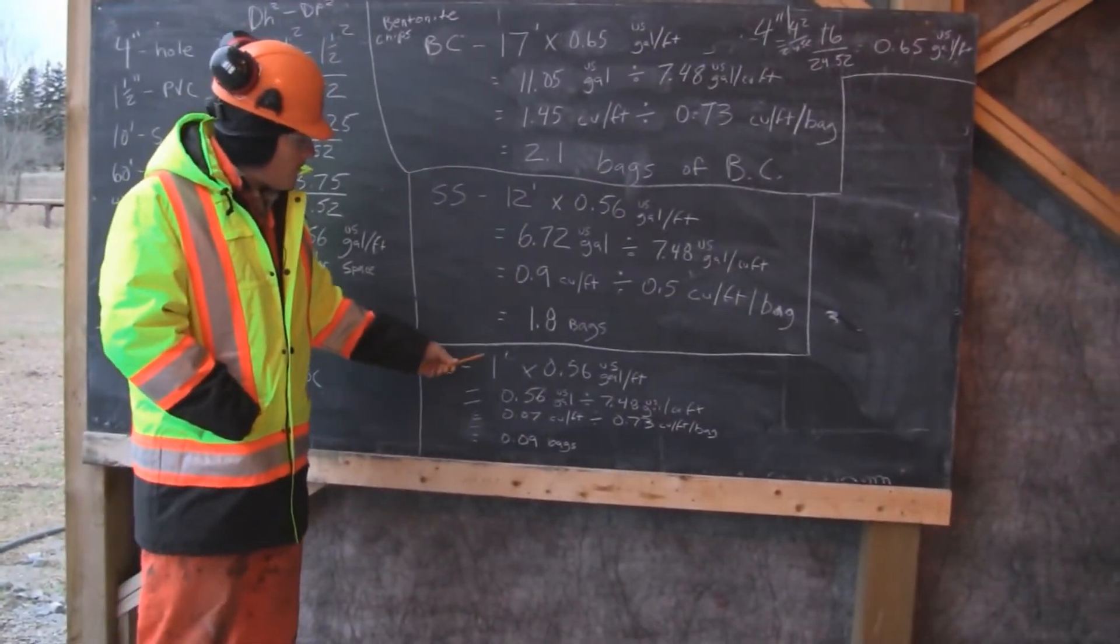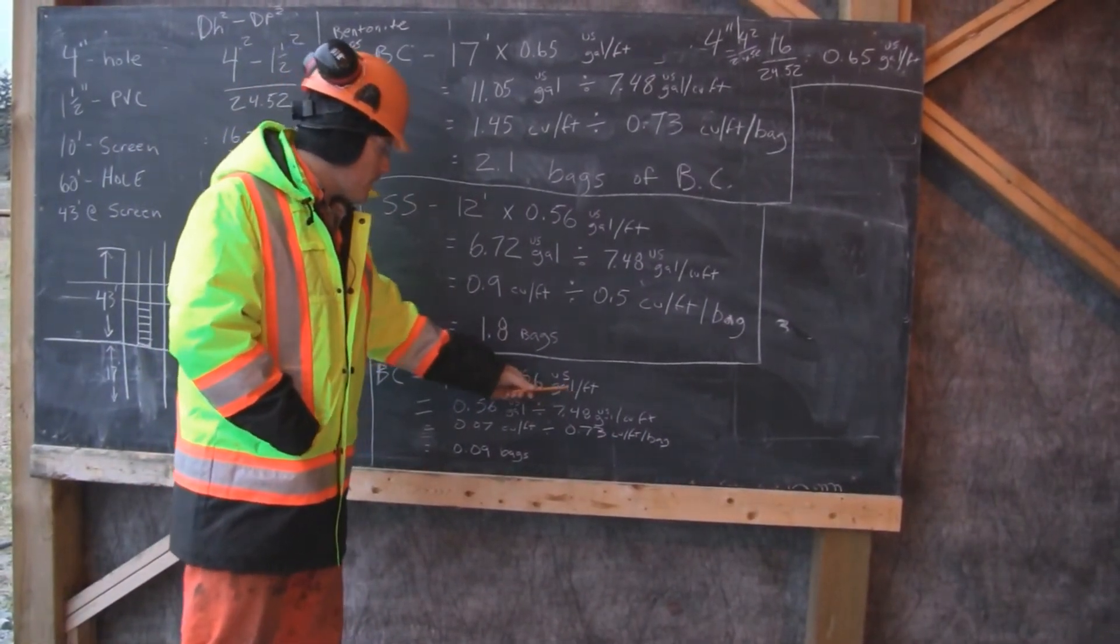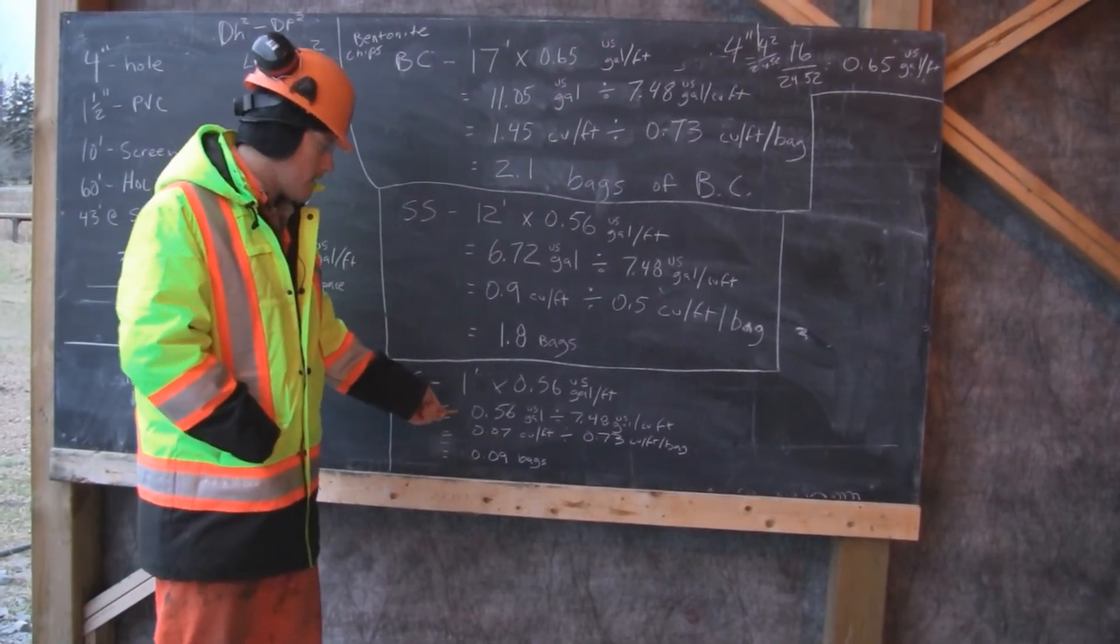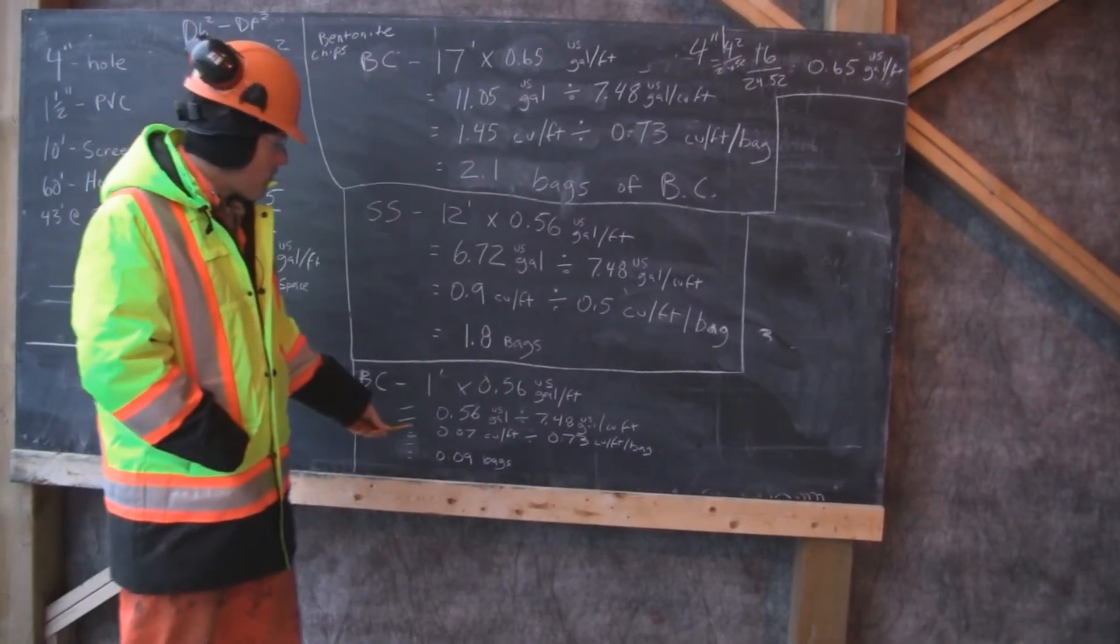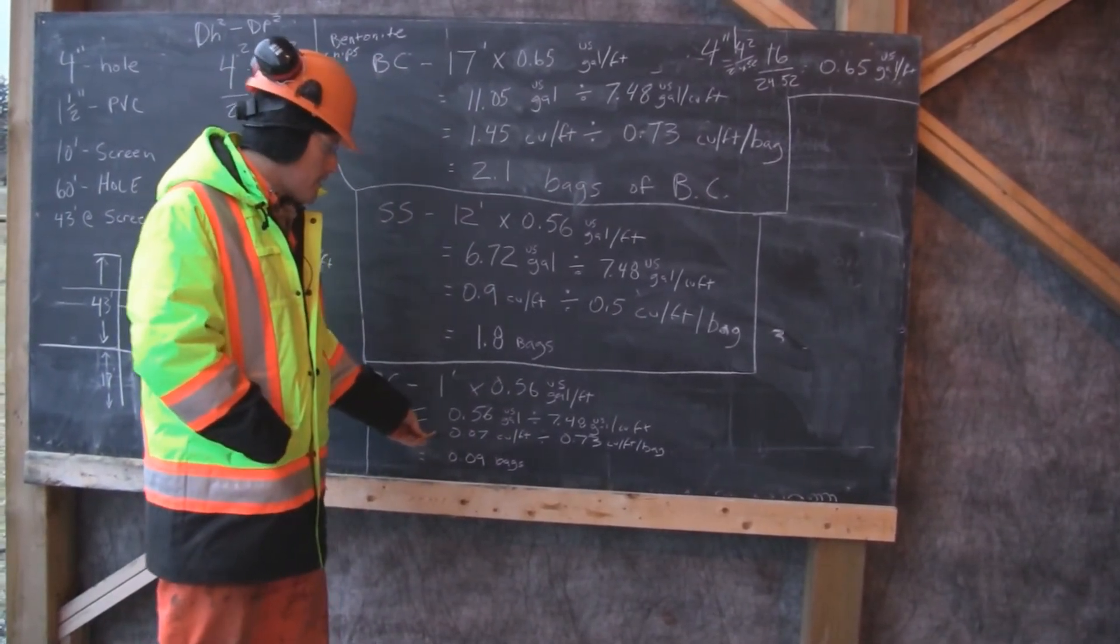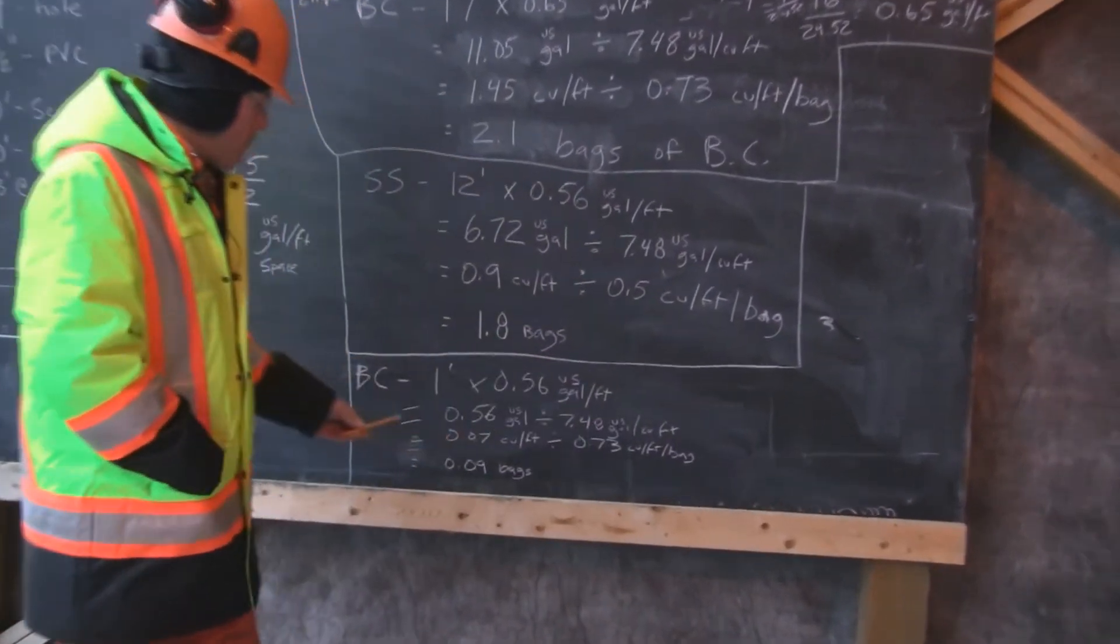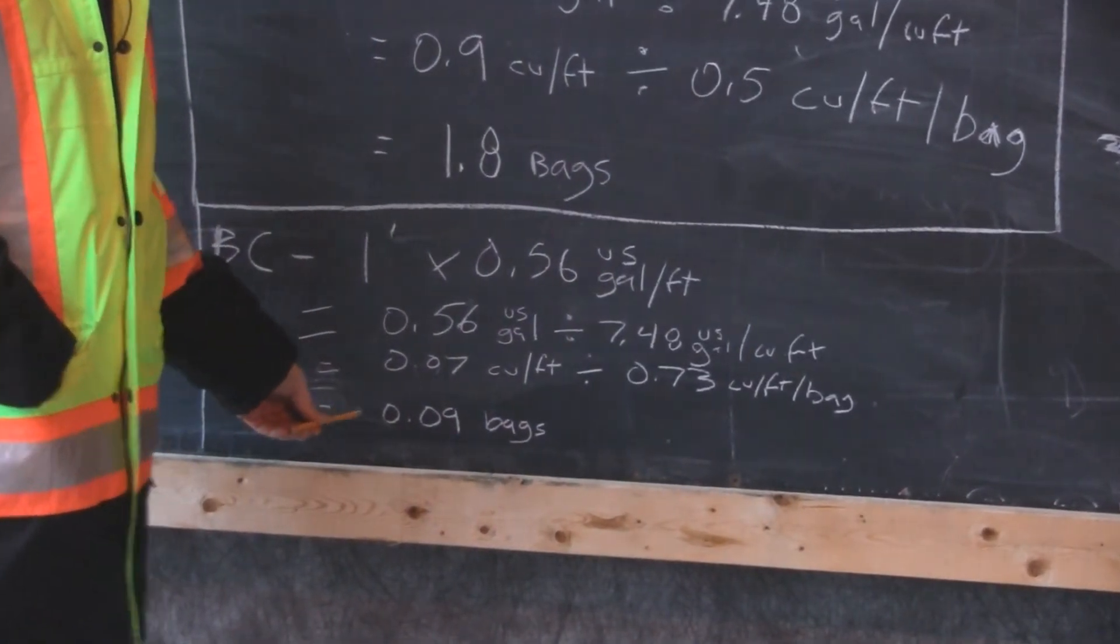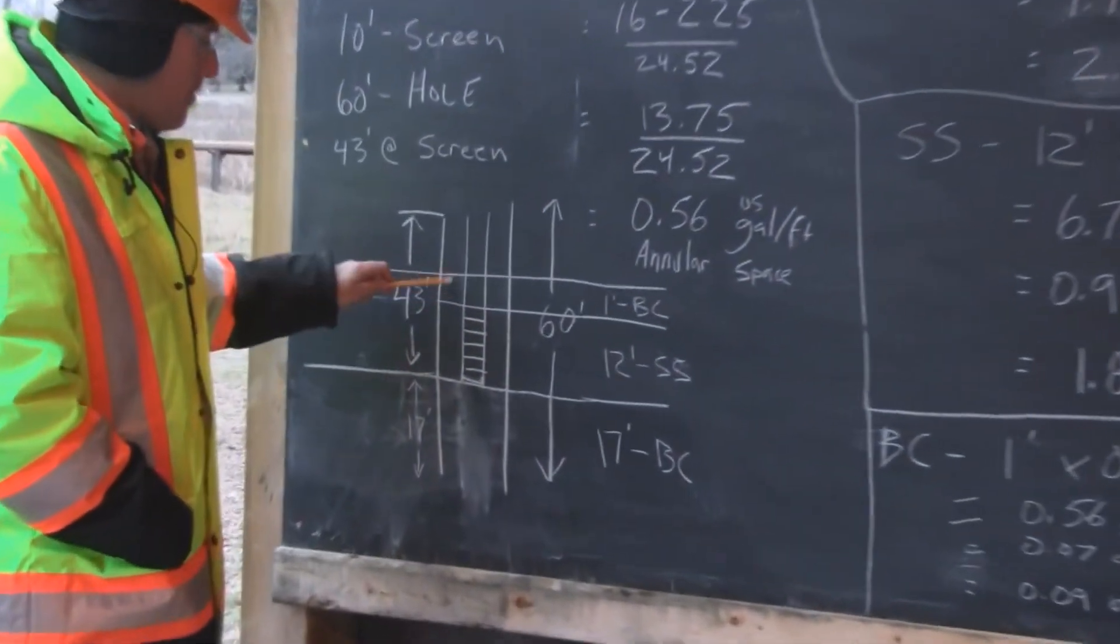There is 1 foot of bentonite chips times 0.56 US gallons per foot gives us an answer of 0.56 US gallons. Divided by 7.48 gives us 0.07 cubic feet of annular space. There are 0.73 cubic feet per bag of bentonite chips, resulting in 0.09 bags of bentonite chips being used.